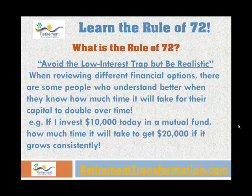What is the Rule of 72? Basically, this rule is used to avoid the low-interest trap. But you have to be realistic — you shouldn't be going for very high interest rate instruments, which may not be realistic and could be Ponzi schemes or other fake ones. Be aware of that. This rule can also help you understand all of those pitfalls when reviewing different financial options.